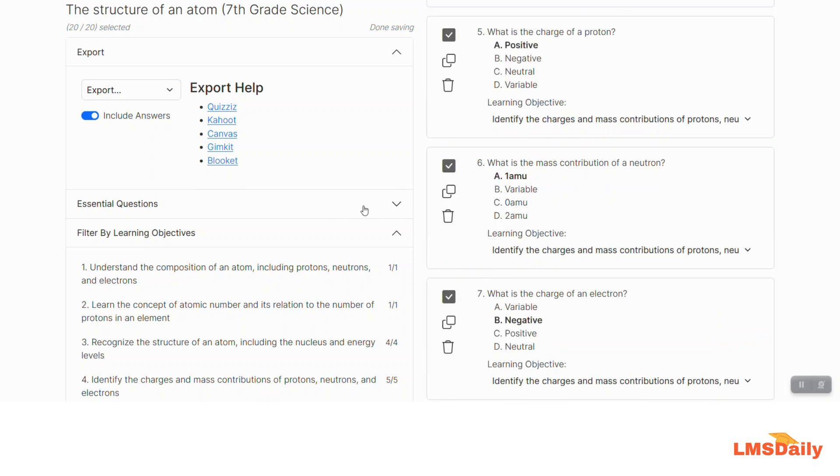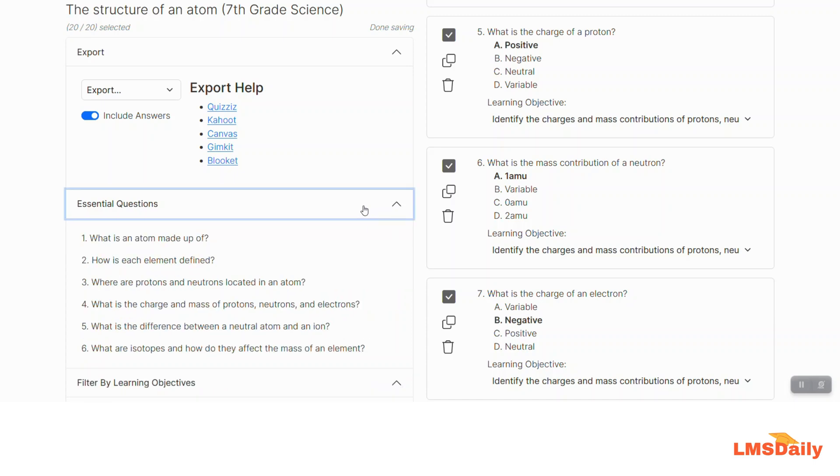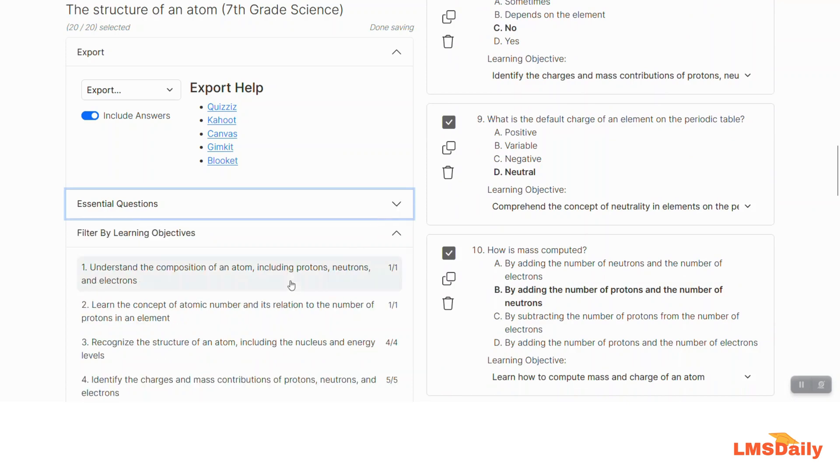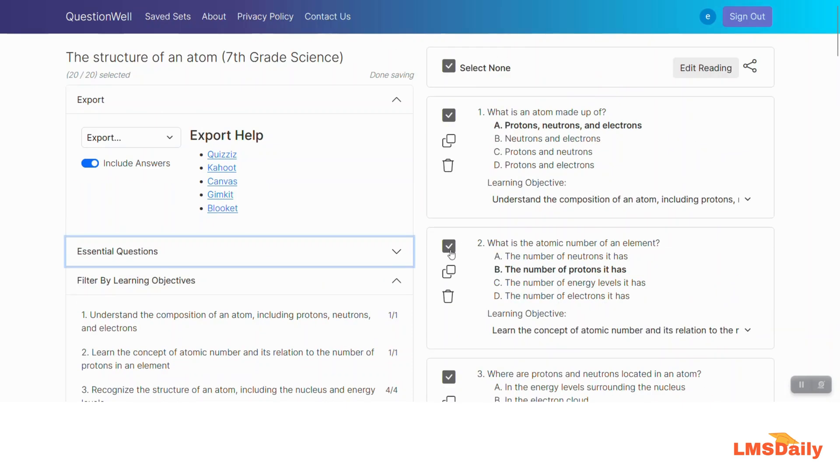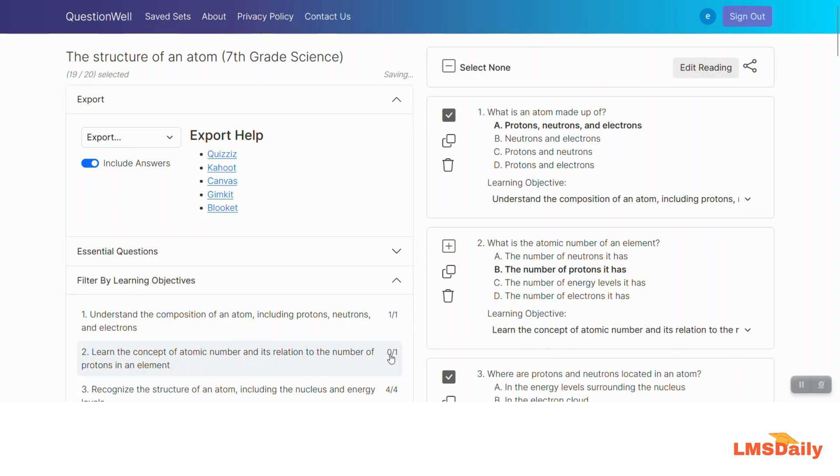QuestionWell is smart in that it gives you a list of essential questions from the text you pasted. You can also see the learning objectives and questions created based on those objectives. For this learning objective, it created one question. If I deselect this question, the value becomes zero, meaning the app created one question but you haven't selected it for your set.